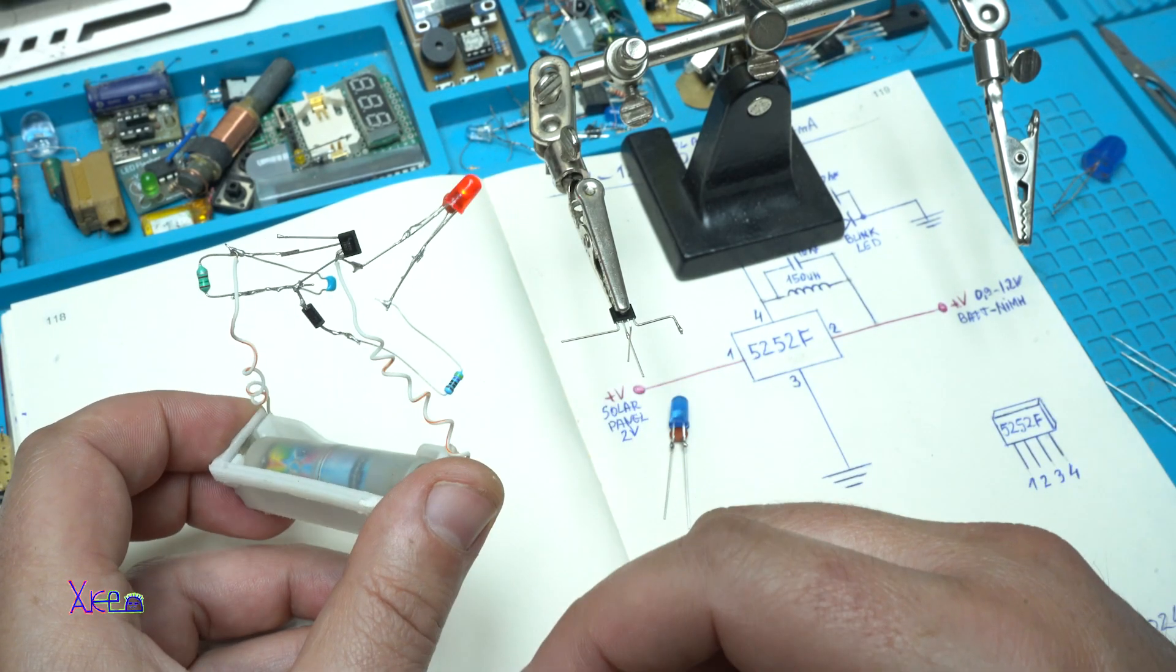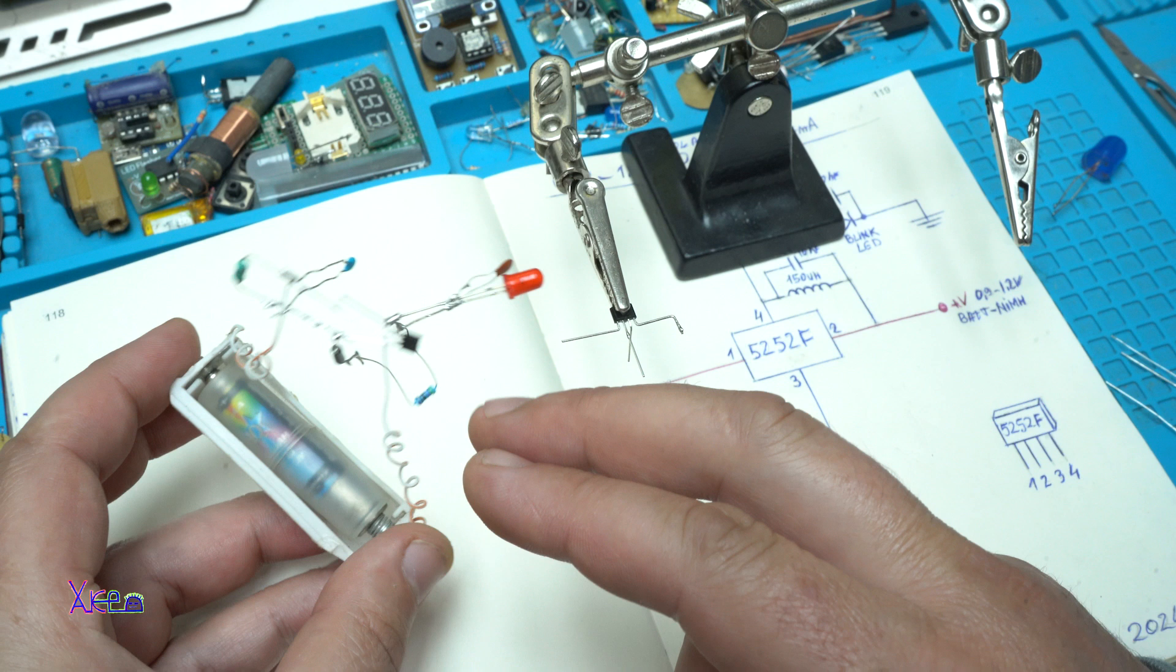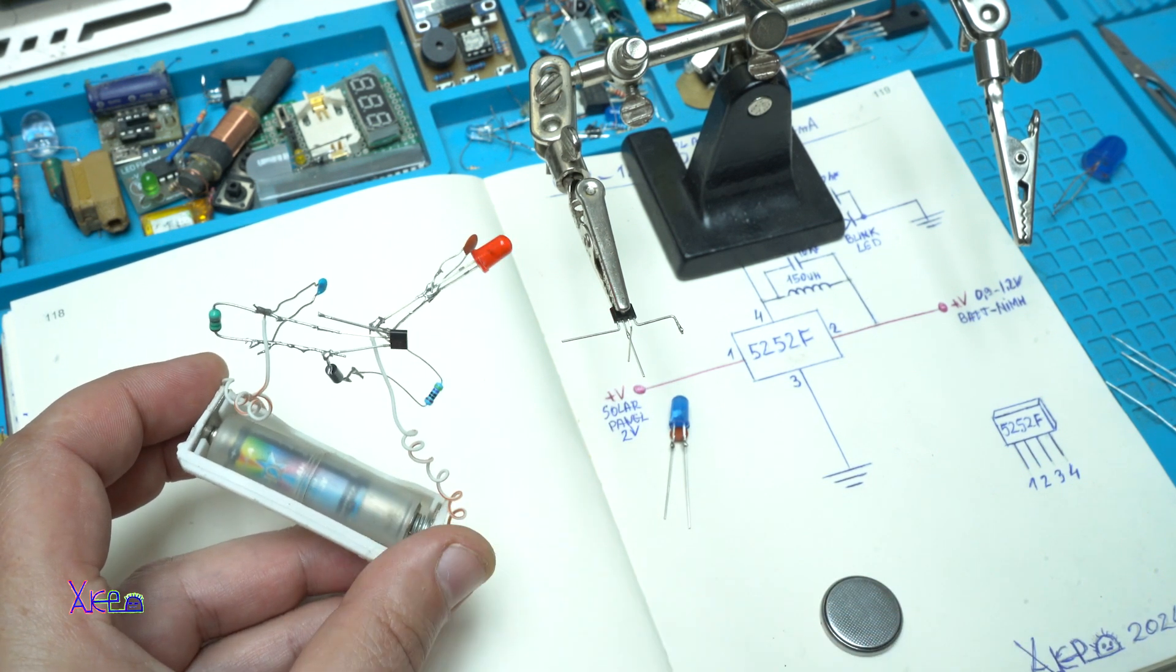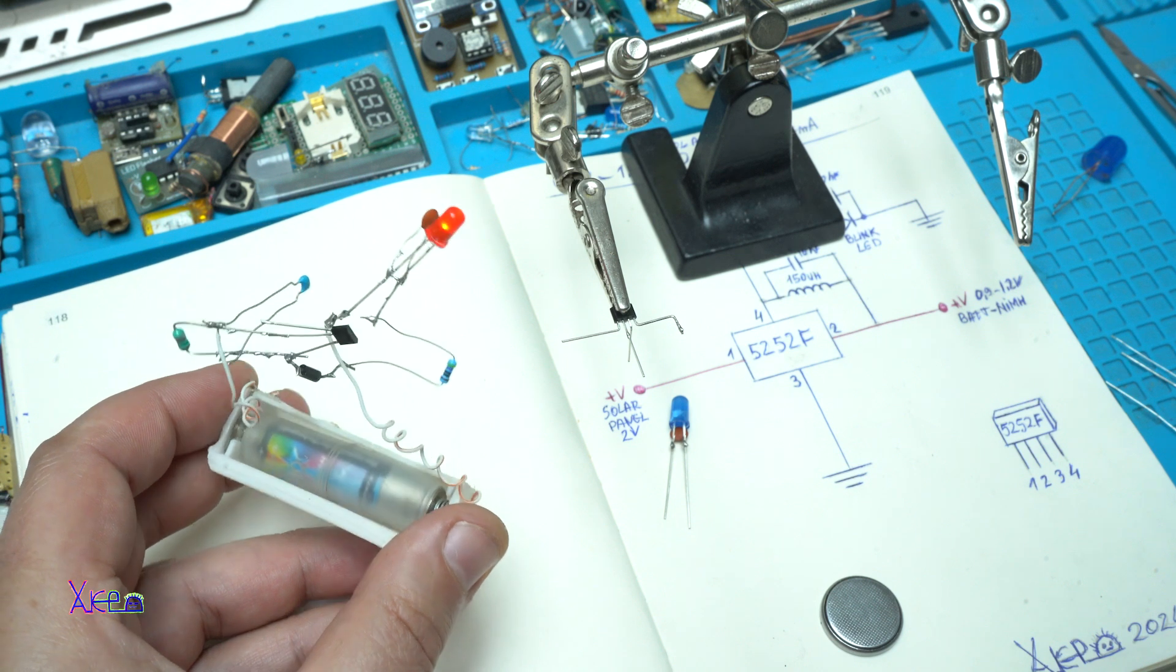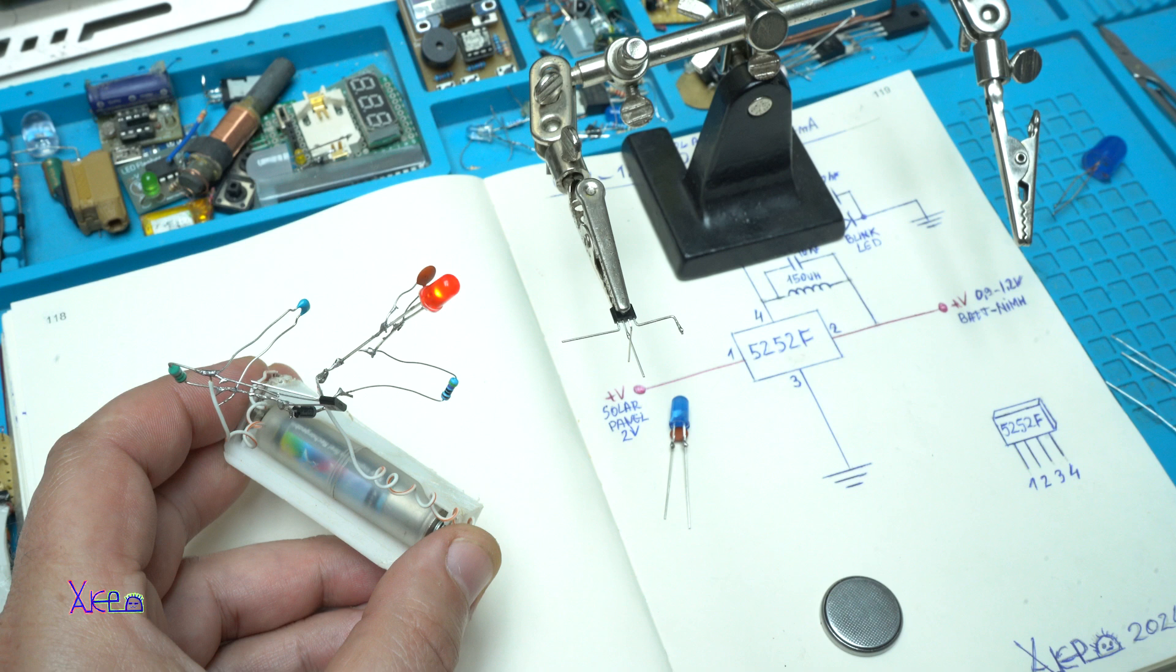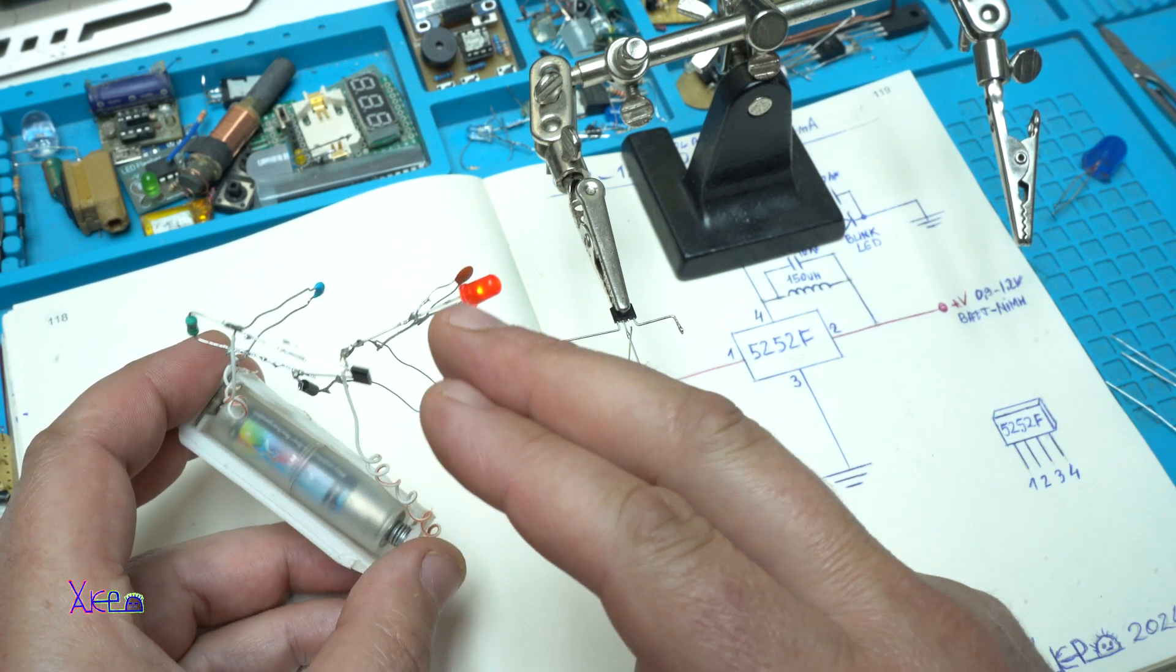Here is my experiment, my testing circuit, where all seven components are soldered. You can see that the red LED is blinking and working properly on a 1.2 volt rechargeable battery, which is good and tested.